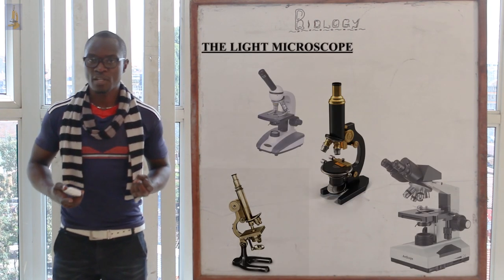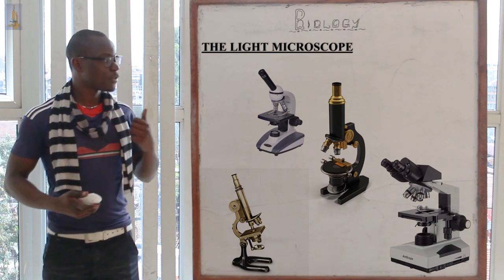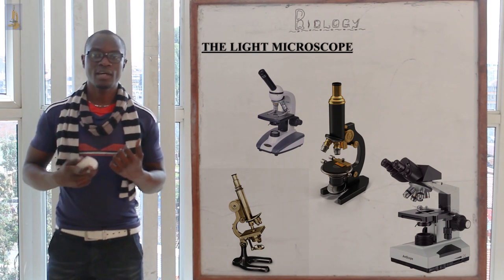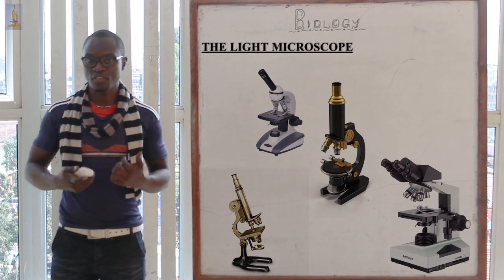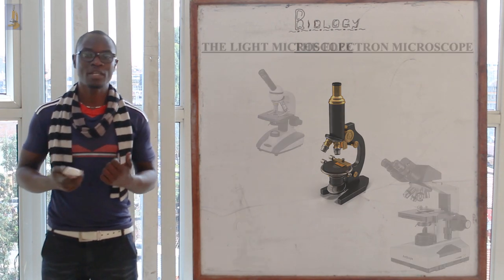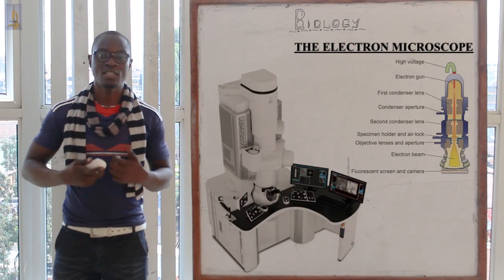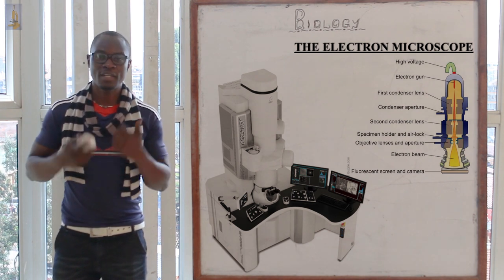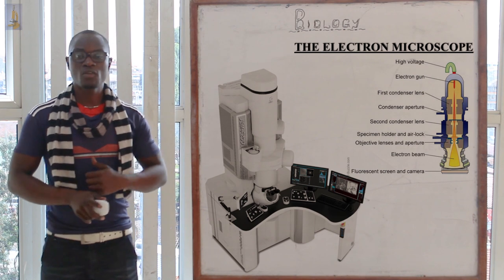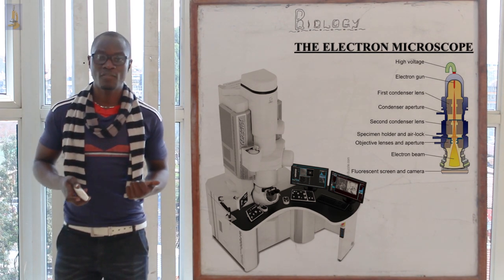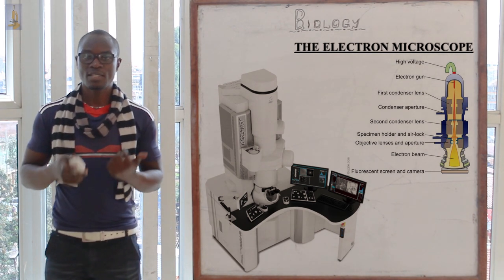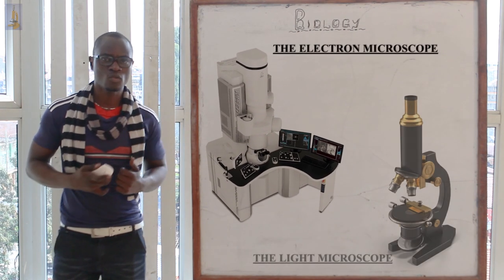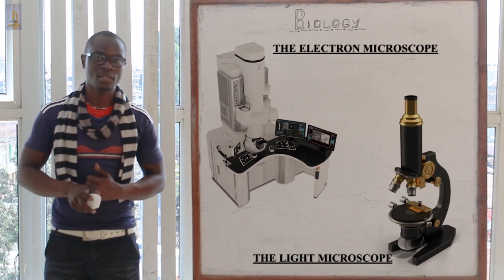There are two different types of microscopes. The first is the light microscope, which is the simplest version. The second is the electron microscope, which magnifies up to 500,000 times, while the light microscope only magnifies up to about 5,000 times.